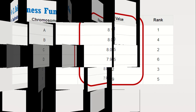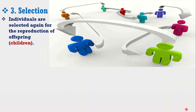Step three is selection. In this phase, individuals are selected for the reproduction of their offspring. The selected individuals are arranged in pairs of two to enhance reproduction. These individuals pass on their genes to the next generation. The main objective of this phase is to establish the region with high chances of generating the best solution to the problem, better than the previous generation.